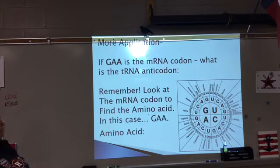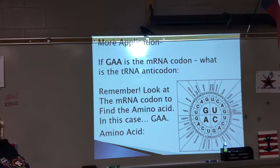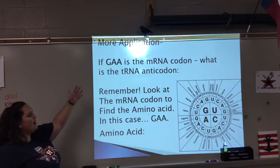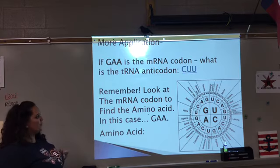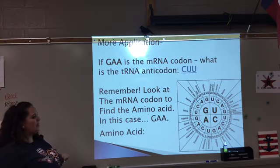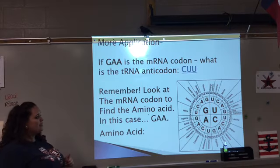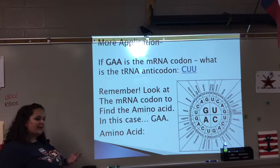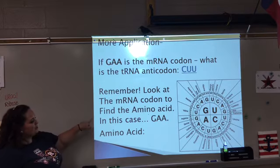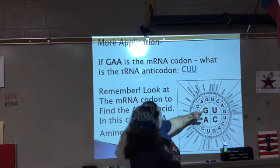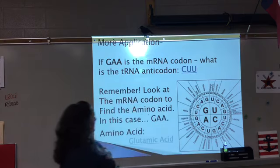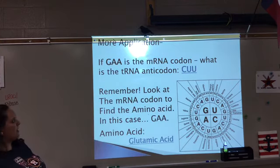We have a question: if GAA is an mRNA codon, what is the tRNA anticodon? Remember, we pair up: G goes with C, A with U, A with U — so you should get CUU. When you go to look up on your wheel, remember we look up the mRNA codons to find the amino acid, not the tRNA anticodons. So in this case we look at GAA rather than CUU, and we should get glutamic acid for our amino acid.